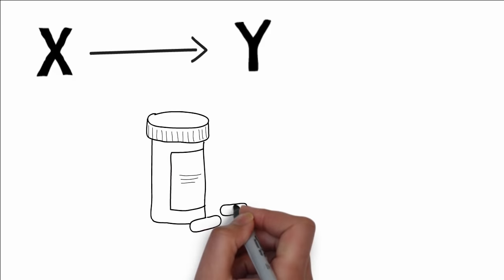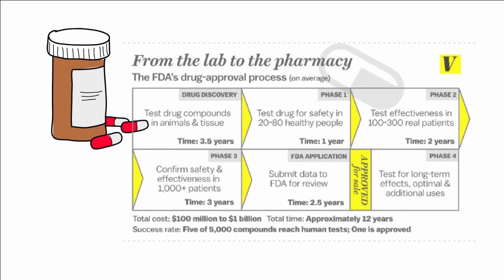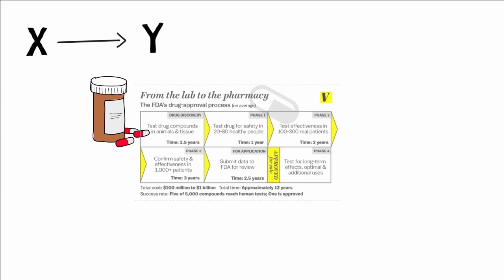An example most of us are familiar with is the pharmaceutical industry. In order to make the claim that a particular drug causes a certain effect, such as lowering your cholesterol or growing hair, the FDA requires companies support those claims, putting the drug through a four-phase, 12-step process that takes approximately 12 years.